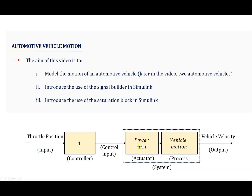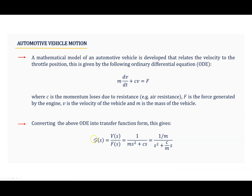The system form is given by an activator from a power unit that generates a force to produce vehicle motion. The mathematical model of the automated vehicle is a second-order differential equation, where c is the momentum velocity due to resistance such as air resistance, f is the force generated by the engine, v is the velocity of the vehicle, and m is the vehicle mass. Applying the Laplace transformation and rearranging gives us the transfer function form.